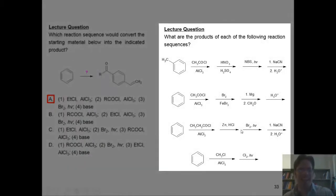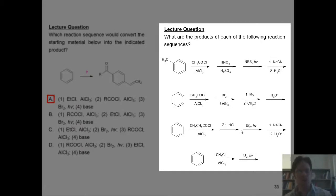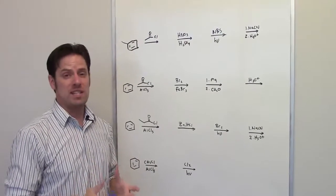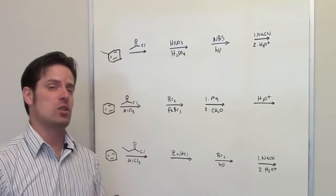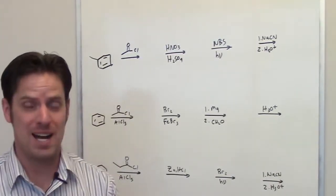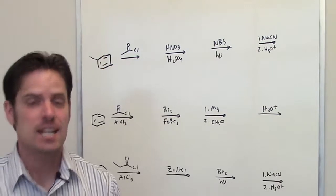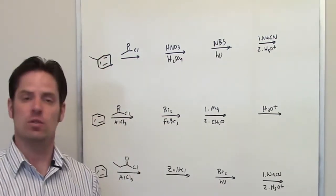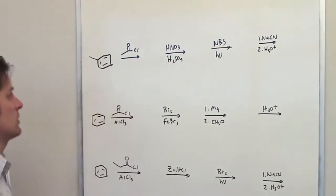Looking at this question, it asks what are the products of each of the following reaction sequences? I'll show you an in-depth discussion with the answers to each of these sequences right now. What does each one of these sequences do to the starting material shown? When in doubt, you might think the answer is pi-halves — but in reality, it is not. If you put that down, you will be wrong. Let me show you the real answers.